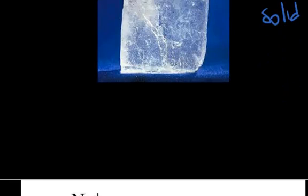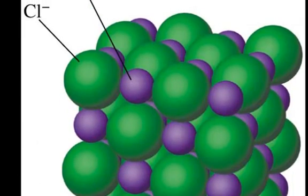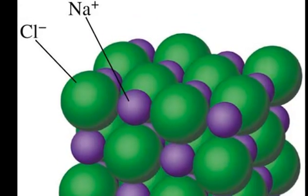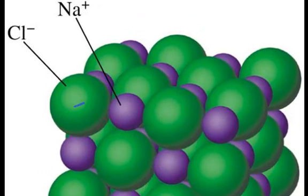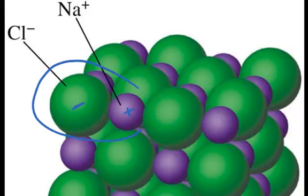This is a classic image of a sodium chloride crystal, where this is the anion and this is the cation. And you see that one formula unit of the ion is right here,